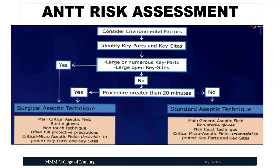The difference between surgical and standard aseptic technique is explained in detail in my previous video, but I will highlight key points here. In surgical aseptic technique, we concentrate on the critical aseptic field — displaying the surgical tray, instruments, and equipment. We need to wear sterile gloves and follow non-touch technique for key sites and key parts, wearing full protective precautions of gown, cap, and mask. The critical micro aseptic fields include the tip of forceps, gauze, cotton, or dressing material that comes in contact with the key sites.